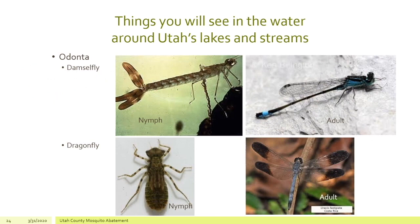The next group is Odonata — these are the damselflies and dragonflies. The damselfly differs from the dragonfly in that the damselfly lays its wings back, whereas an adult dragonfly holds its wings straight out. The nymphs also look very different: the damselfly nymph looks almost like a straight stick with some tails, whereas a dragonfly nymph looks a little more like a beetle or a bug.